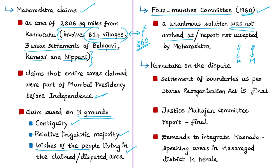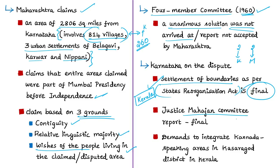Karnataka's stand is that the settlement of boundaries as per the States Reorganisation Act is final. Karnataka was initially open to adjusting the border in the 10-mile belt of the reorganized boundary, but its present stand is that no further adjustment is permissible. Additionally, Karnataka has a demand to integrate Kannada-speaking areas in Kasaragod district of Kerala into Karnataka.